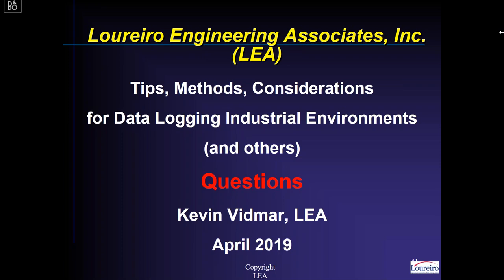At an AEE conference presentation the other day, gentlemen were assuming power factor of 0.85 for compressed air equipment, knowing that power factor goes down when the compressor unloads. Their rule of thumb is: if you use 0.8, you're covering the loading and unloading and you're probably okay in your calculations — not perfect and not precise, but probably okay for determining whether it's the right thing to change to a different compressor.